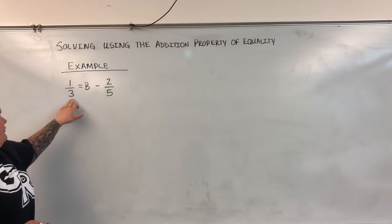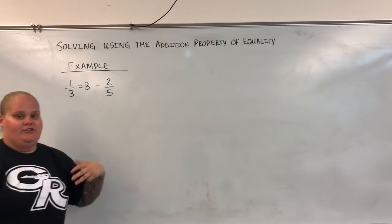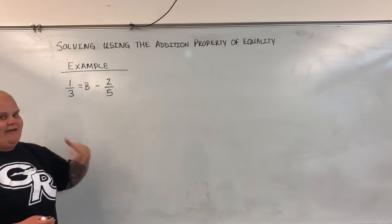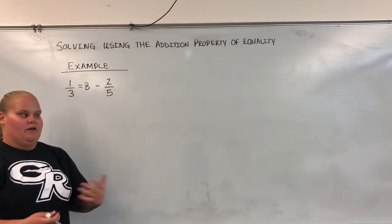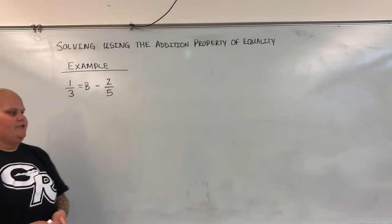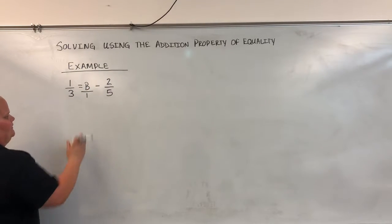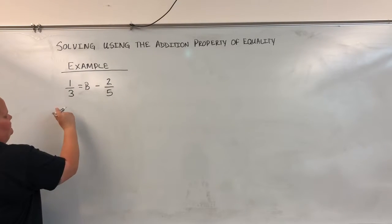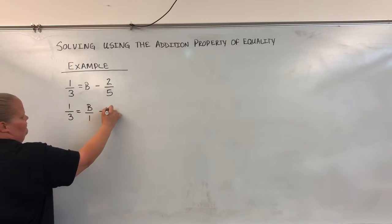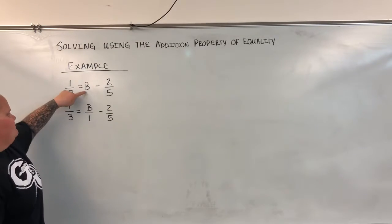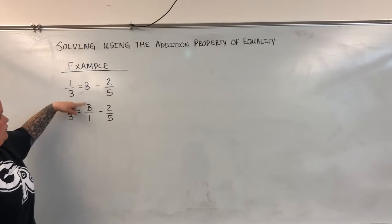So what we're going to look at is how to get rid of them. We have 1 over 3 and we have 2 over 5, so they don't have a common denominator. B doesn't have a denominator. It's not a fraction, but we can make it a fraction if we put it over 1. So I have 1 over 3 equals b over 1 minus 2 over 5. All we did is make this b a fraction by putting it over 1.